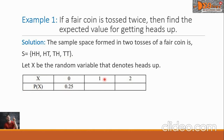When X = 1 (one head), there are two sample points HT and TH, so the probability is 2/4 = 0.5. When X = 2 (two heads), there is one sample point HH, so the probability is 1/4 = 0.25.